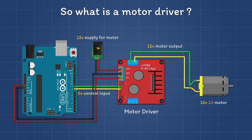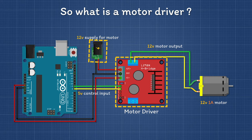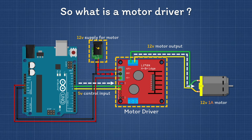Motor drivers are used to solve this problem. In this circuit, the motor driver is installed between the motor and the controller. It gets power from the 12 volt external power source and receives a control signal from the Arduino. The motor driver amplifies this control signal with the help of the external power and sends it to the motor, so the motor has enough voltage and current to operate at its full potential.